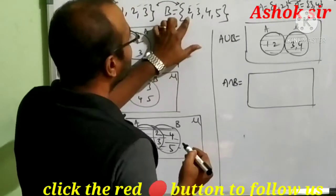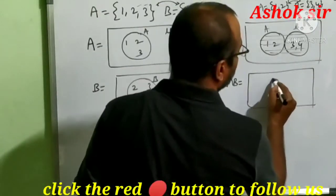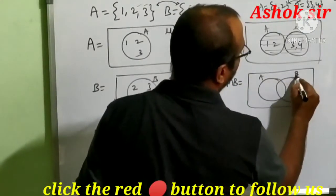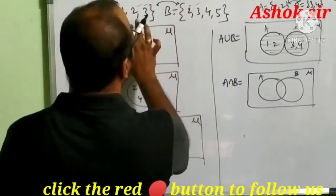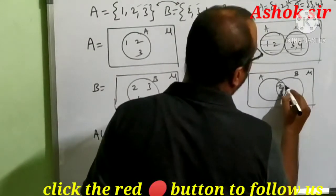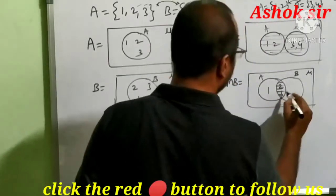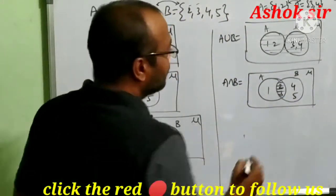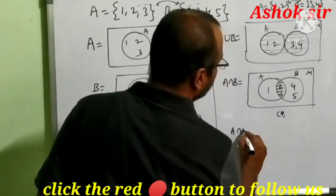Now A intersection B. Again, common elements exist so the sets are not disjoint — the circles overlap. The common elements are 2 and 3, placed in the overlapping area. For A intersection B, we shade only this common overlapping part. The elements 1 and 4, 5 remain in their exclusive regions and the shaded common part — 2, 3 — is the answer for A intersection B.